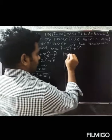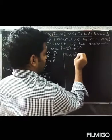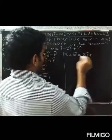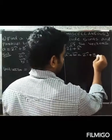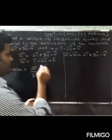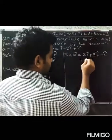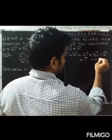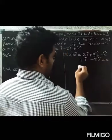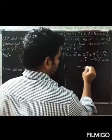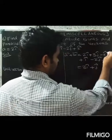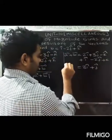Now compute a vector plus b vector. So (2î + 3ĵ − k̂) + (î − 2ĵ + k̂) equals 3î + (3 − 2)ĵ + (−k̂ + k̂), so the k terms cancel, giving a + b = 3î + ĵ.